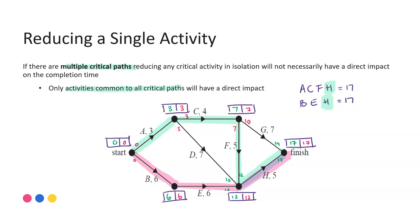If the question is asking what should you reduce H by, you are just aiming to match the next best pathway in the network. That's where the table method can be really useful and a really efficient way of being able to see what that is and how much to reduce by.